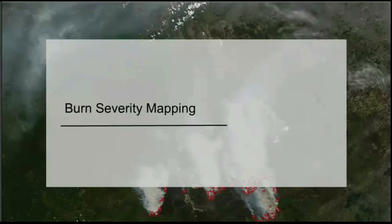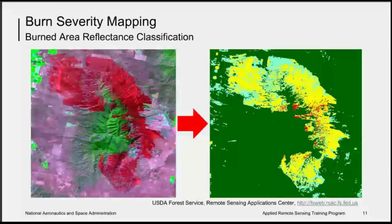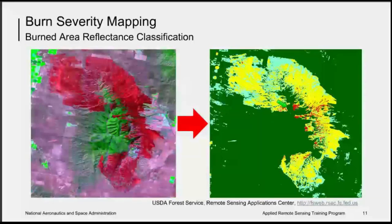First we will review burn severity mapping and then discuss the remotely sensed products available for wildfire applications. Landsat imagery is often used to assess post-fire severity in burn regions. Burn severity mapping can be conducted using a fairly simple change detection approach using a pre- and post-fire image. The image on the left is a Landsat image of a fire that occurred in Idaho in 2007. Combined with a pre-fire image, it can be used to create a burn severity map — the red areas show where the highest burn severity occurred.